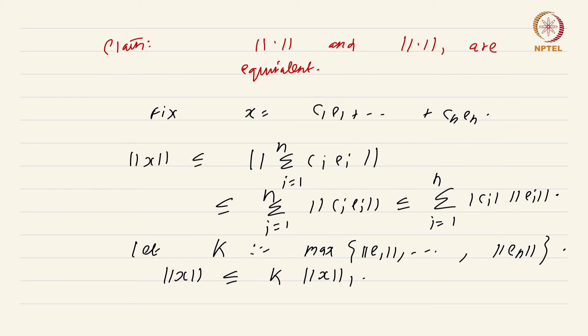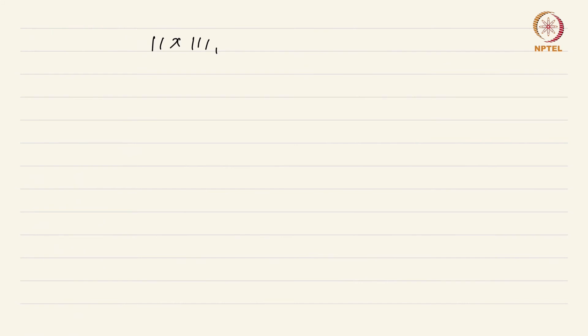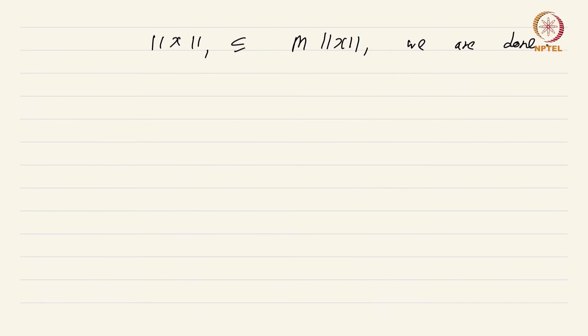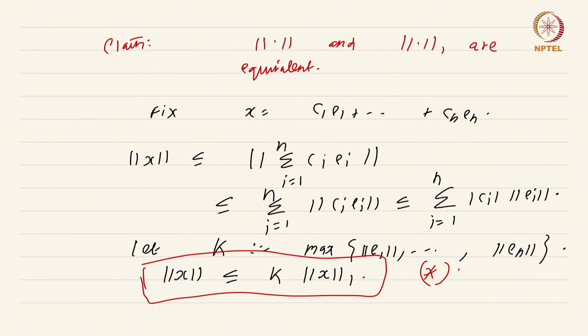If we could now show that ‖x‖₁ ≤ M·‖x‖ for some other constant M, we are done. Before we proceed with showing that, we look at a consequence of the fact that ‖x‖ ≤ K·‖x‖₁ — I have highlighted this equation and called it (★).